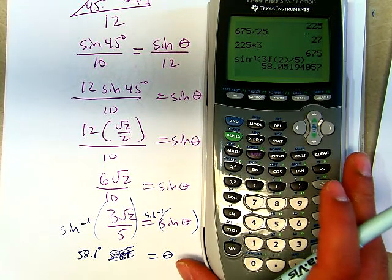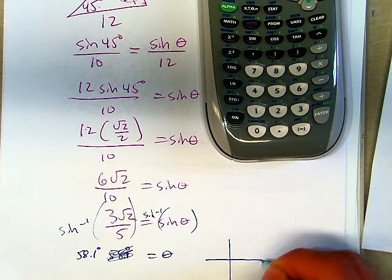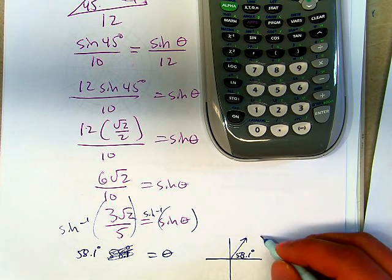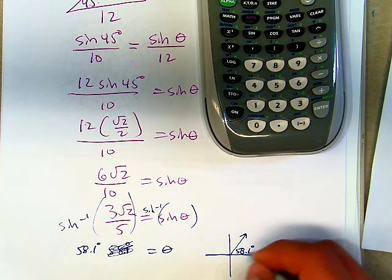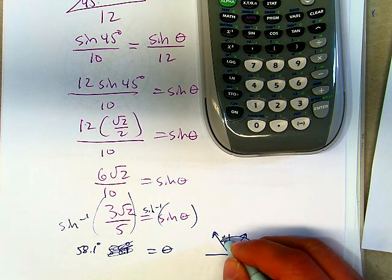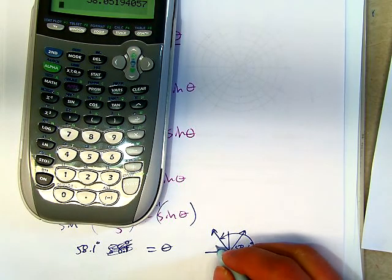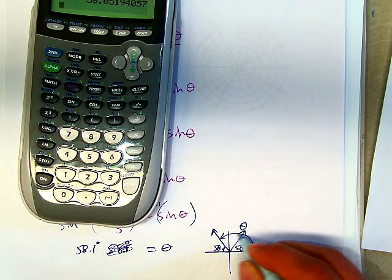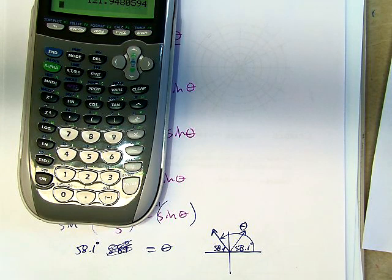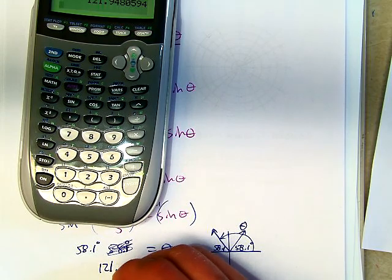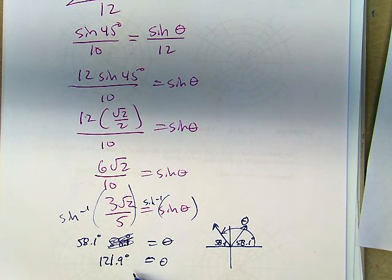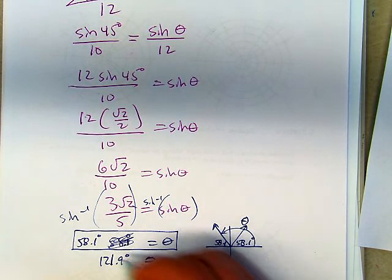Now, from last chapter, we know that there's actually two places where the sine is positive 3 root 2 over 5. We know that 58.1 will have a positive sine value. And we know that if we go to the second quadrant, that this angle, whatever that is, will also have a positive sine or a positive y value. So we actually have to do kind of like what we did last chapter. Since this angle is going to be 58.1, I want to find out what this other option here is. So if I do 180 minus that 58.1, we get 121.9. So we have two possible angles here that we're working with. This is what I mean about law of sines. You always have to check for the second case that may or may not work.